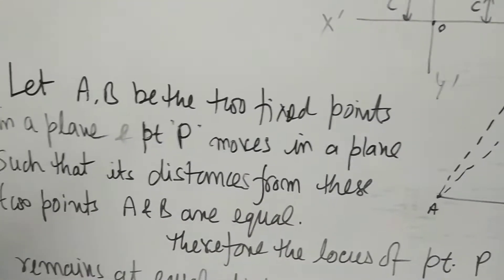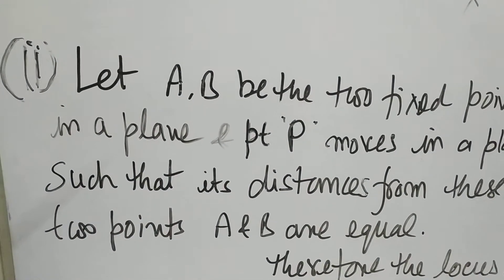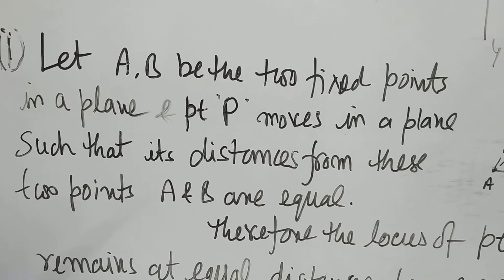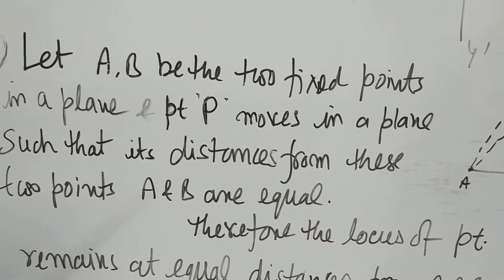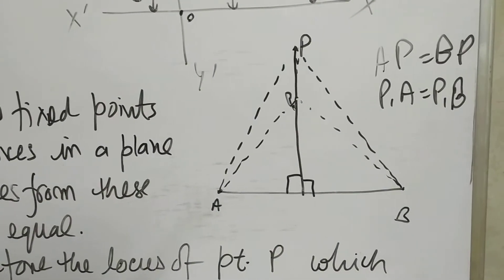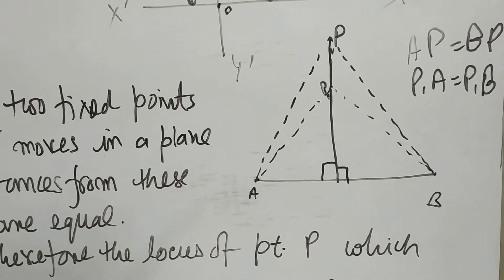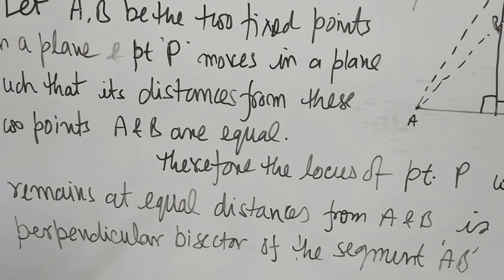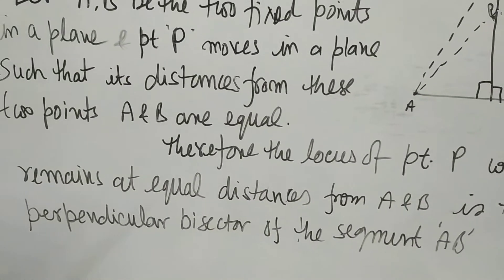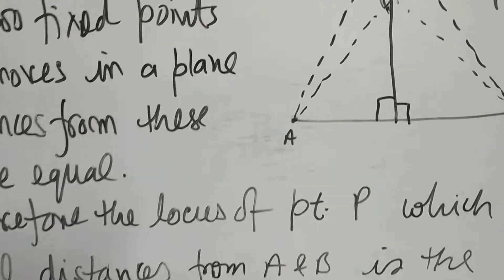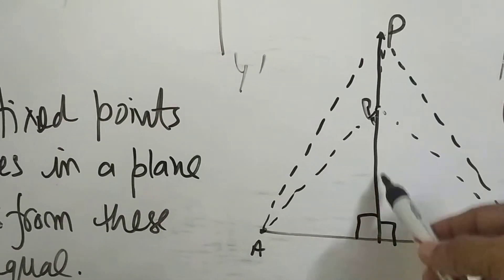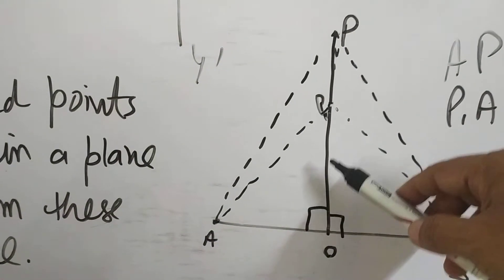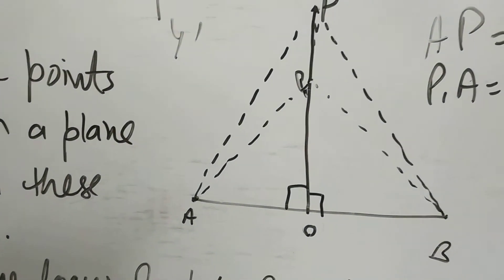It is easy to get confused, so you can repeat the condition: let A and B be two fixed points in a plane and point P moves in a plane such that its distances from these two points A and B are equal. Therefore, the locus of point P which remains at equal distances from A and B is the perpendicular bisector of segment AB. This perpendicular bisector can be written as line OP, which is the locus of point P in this case.